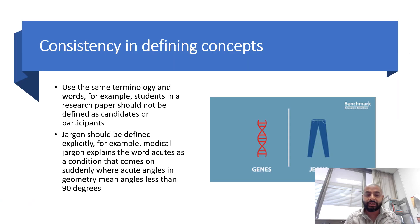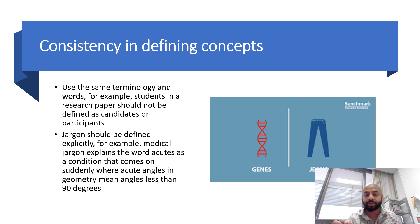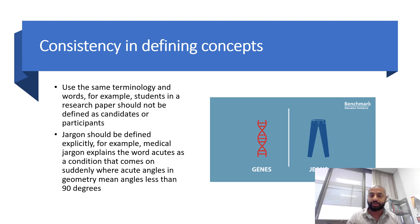You must also be very consistent in defining your concepts, using the same terminology throughout. For example, if you call people 'students,' do not then switch to 'candidates' or 'participants' without explanation, as this confuses the reader. If you need to change the term — for instance, referring to students as 'participants' in a research context — clearly explain that transition the first time you make it.